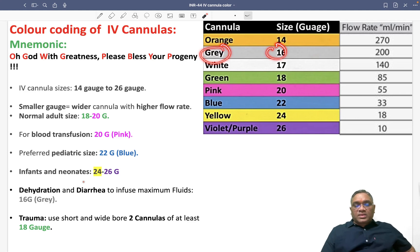In trauma, as per the latest ATLS guidelines, you have to use short and wide bore two cannulas of green size 18 gauge. We use green 18g size for trauma patients.